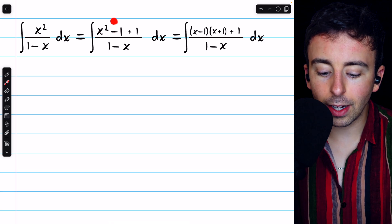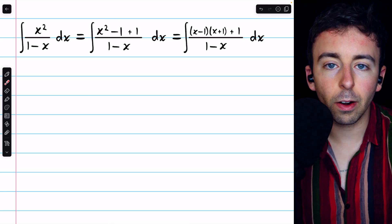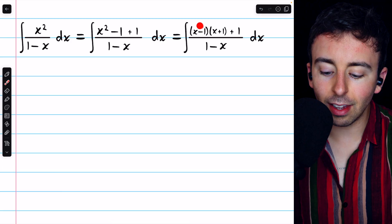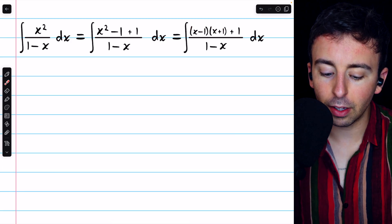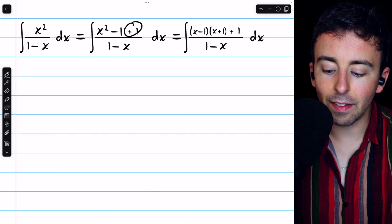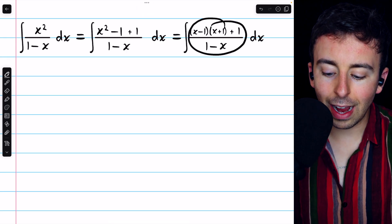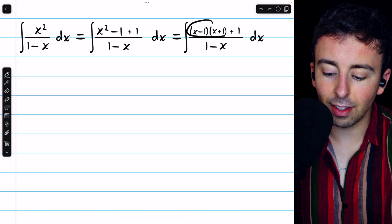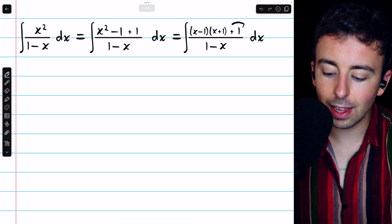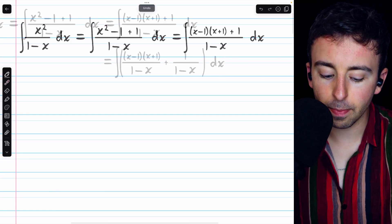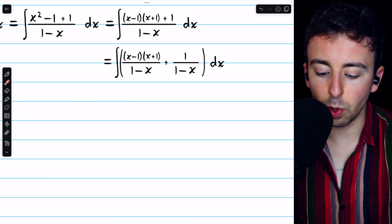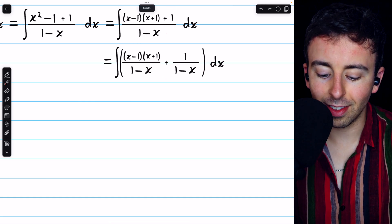But then x squared minus 1 is a difference of squares, which we can rewrite as x minus 1 times x plus 1. And then, of course, we still have that plus 1 hanging out in the numerator. Now we can split this fraction. We can have this as the numerator in one term, and this as the numerator in the other term. We've just split this fraction across that addition.